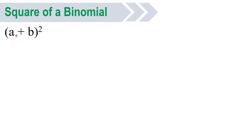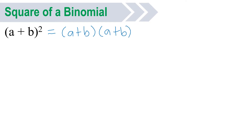Square of a binomial. Here's an example. We have (a + b) raised to 2. We call it square of a binomial because the binomial is being raised to 2. This square of a binomial is just the same as (a + b) times (a + b). This is the expanded form of (a + b) squared. Usually, we apply the FOIL method to solve for this.